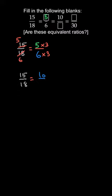इसके लिए हम इस fraction को पहले reduce कर लेते हैं। 15 by 18 को 3 into 5 divided by 3 into 6 लिख सकते हैं। 3 और 3 cancel हो जाते हैं, तो यह 5 by 6 हो जाता है। अगर 5 by 6 है, तो 5 के साथ 2 multiply करने पर 10 आएगा। वही 2 को 6 के साथ भी multiply करो — 6 into 2 = 12।